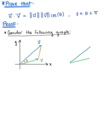Looking at this triangle, we know that one side comes from vector u, so it has a side length equal to the magnitude of vector u. The side on the bottom comes from vector v, so its side length is the magnitude of vector v.